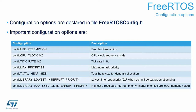So if we set here 5, it means that all interrupts that need to execute any operating system functions must have their priority set between 5 and 15 — between this max syscall and lowest interrupt priority. Interrupts with a lower number — so in fact higher priority — meaning 4, 3, 2, 1, and 0 — would be completely independent from the operating system and would not be blocked by it in any context switch or critical section.